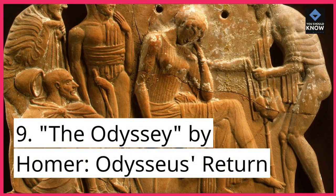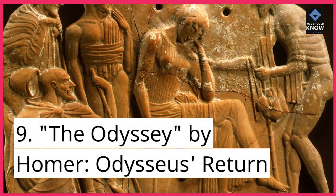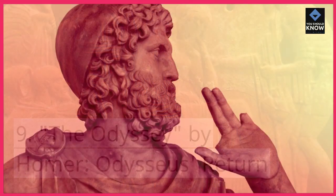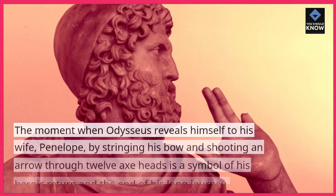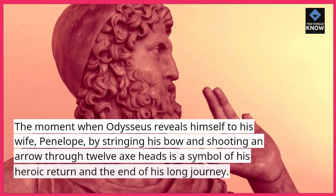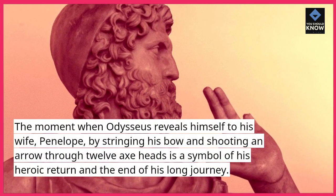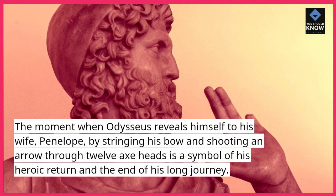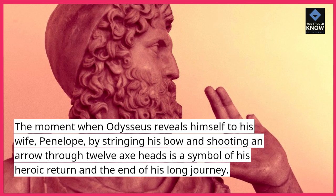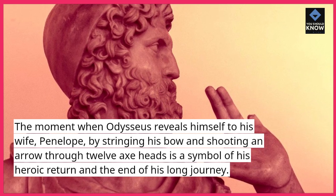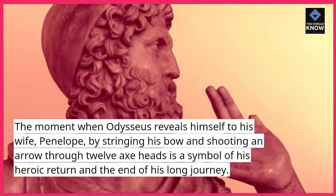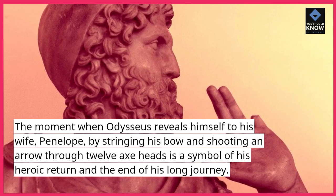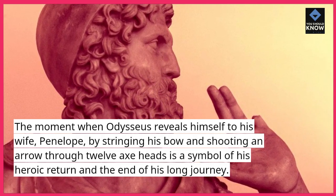9. The Odyssey by Homer — Odysseus's Return. The moment when Odysseus reveals himself to his wife Penelope by stringing his bow and shooting an arrow through twelve axe heads is a symbol of his heroic return and the end of his long journey.